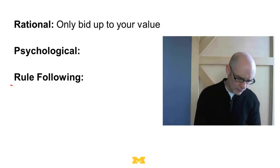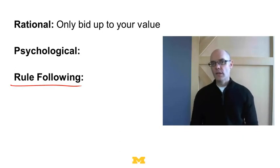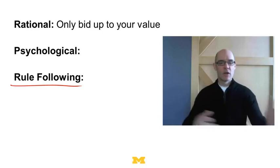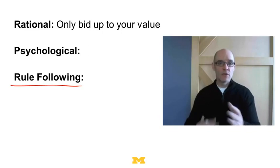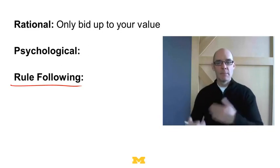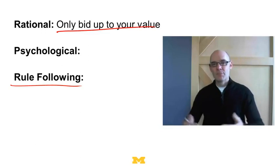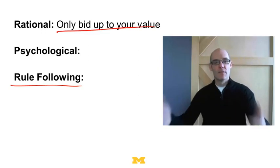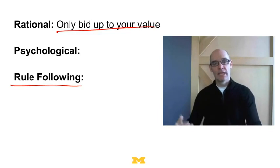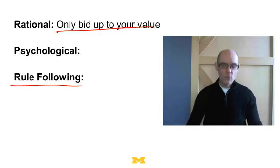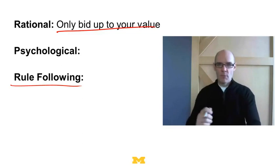What about rule-following in this setting? A rule-following bidder might have some rule, like starting out at half their value and going up by $5 or $2. But at the end of the day, they're probably only going to bid up to their value — they wouldn't bid above their value, because then they're paying more than it's worth. And they probably wouldn't stop bidding at less than their value, though the rule could determine how much they raise bids by.